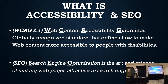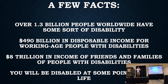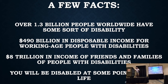A few facts: over 1.3 billion people have some sort of disability. Think about that — 1.3 billion people with a B. That's $490 billion in disposable income from these individuals, from working-age people, and a trillion in income from friends and family of these individuals.